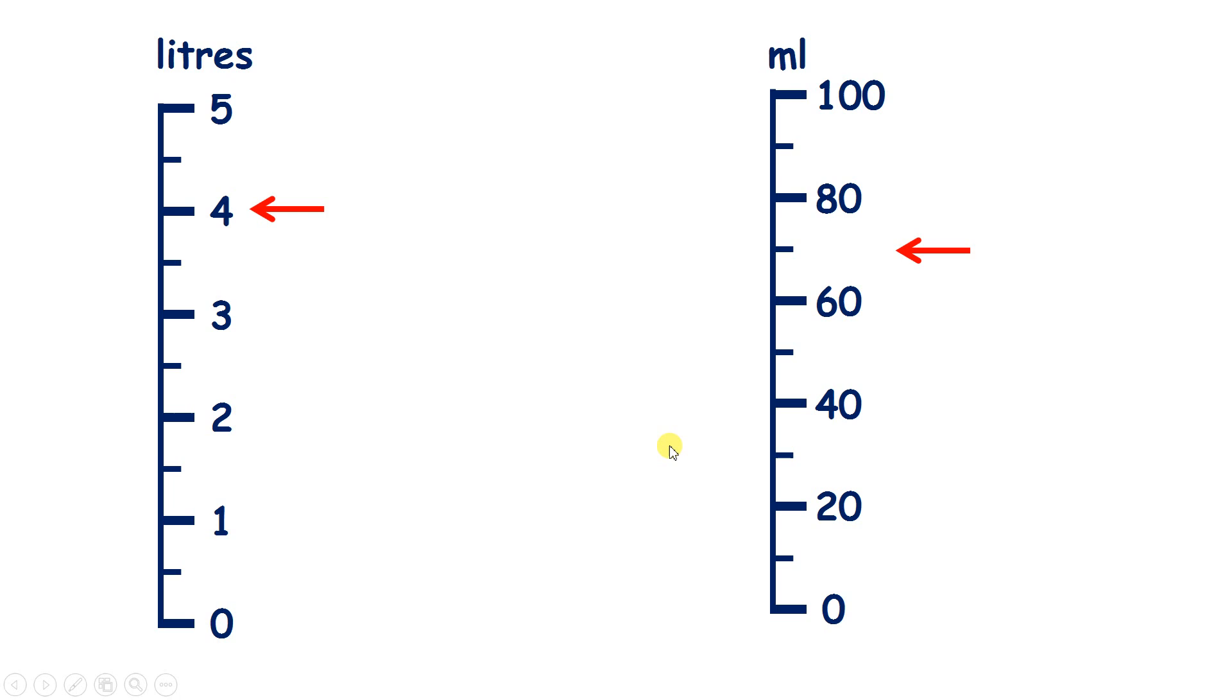We need to be able to read a scale to measure volume, and this first one's nice and easy, because we have the arrow pointing straight at a number, so we have 4 litres.